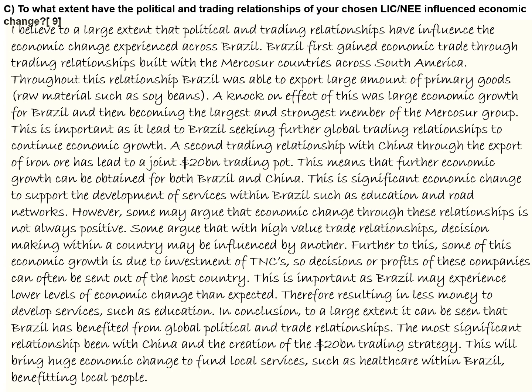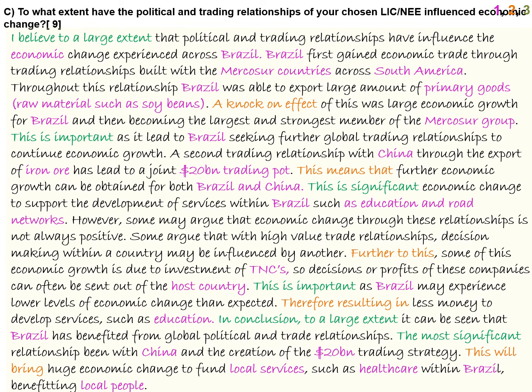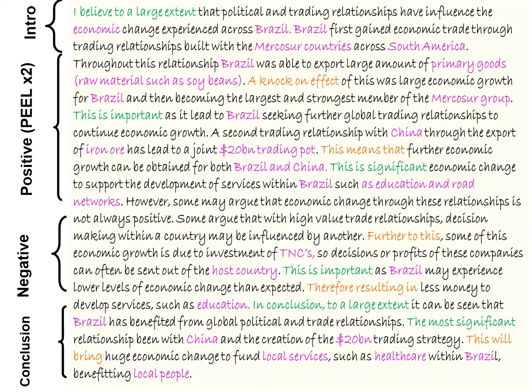You can see there are lots of similarities between this question and the previous question — a lot of the information is transferable, and that's absolutely fine so long as it answers the question. Here are the AO1s in pink, AO2s in orange, AO3s in green — at least a third to half of the words meet the assessment objectives. There's your introduction, two PEEL paragraphs to support your viewpoint, a negative offering another point of view, and finally your conclusion.